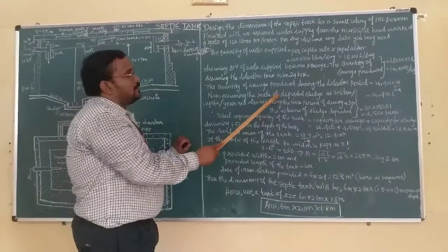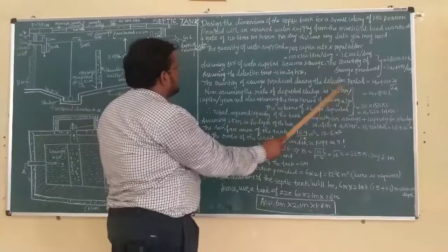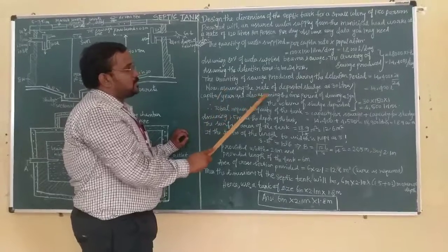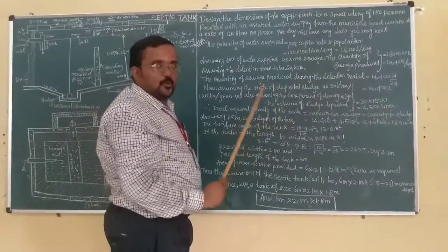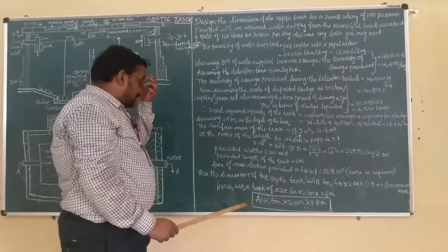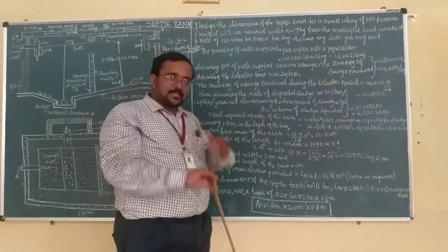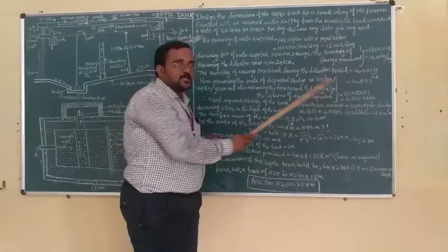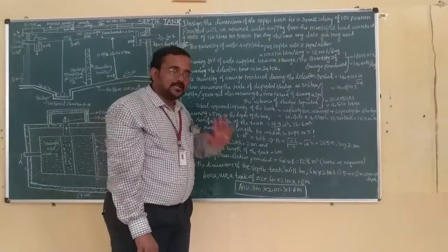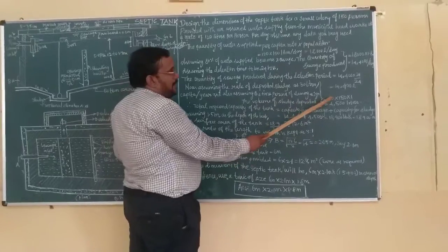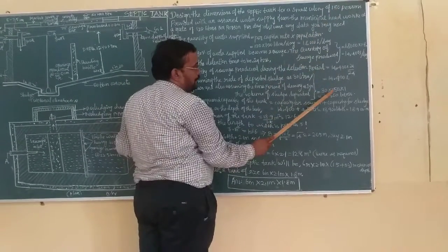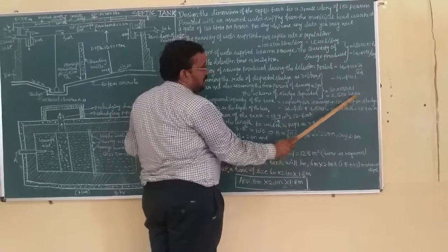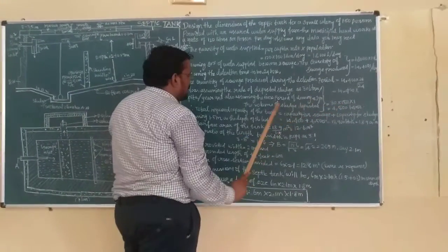Now the rate of deposited sludge is assumed as 30 liters per capita per year. Sludge production is 30 liters per capita per year. Assuming the time period of cleaning is one year, it will only be cleaned once per year. That means sludge deposit - septic tank is made up of two things: sewage and sludge. We have to accommodate the sewage and the sludge. So volume of sludge: 30 liters times 150 persons for one year. That is 4,500 liters of sludge.